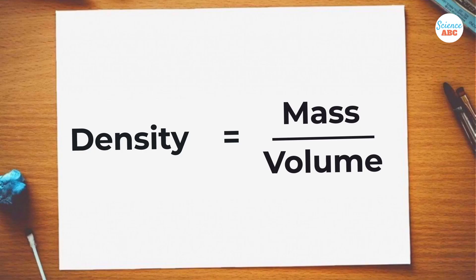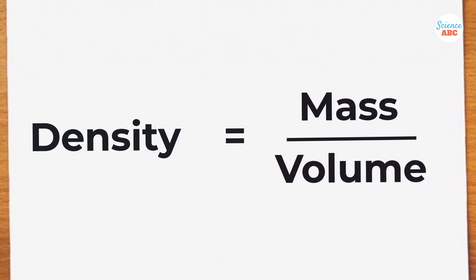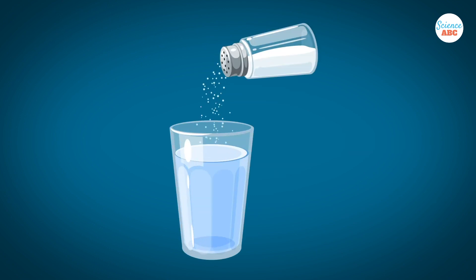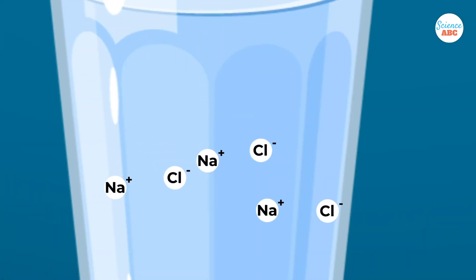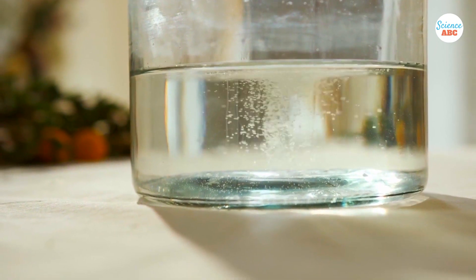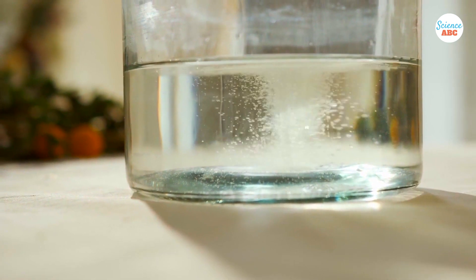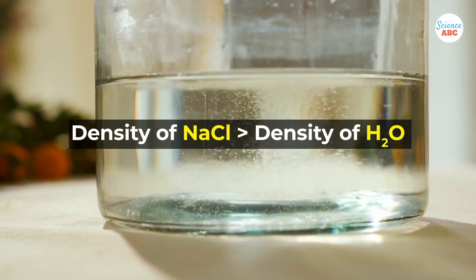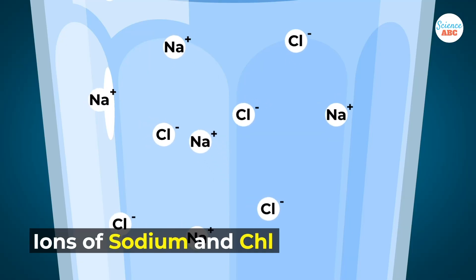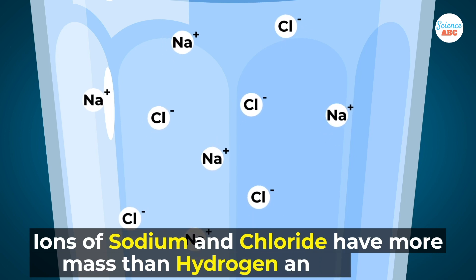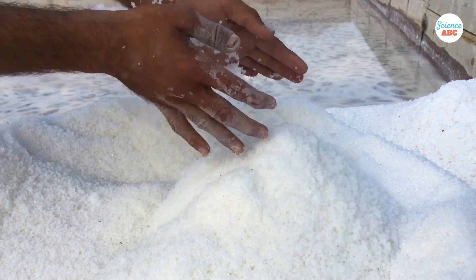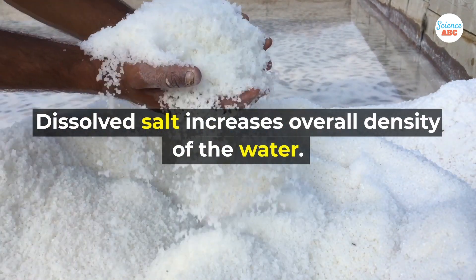When we say that salt water is denser, we mean that there is more mass per volume. Basically, when the salt, NaCl, is mixed with the water, H2O, it dissolves into ions of sodium and chloride. The addition of salt in the water increases volume by a small factor, but it increases mass by a large amount, simply because NaCl is much denser than H2O. Its ions, sodium and chloride, have significantly more mass than the atoms of oxygen and hydrogen. Thus, when salt dissolves in water to form ions, it increases the overall density of the dissolved water.